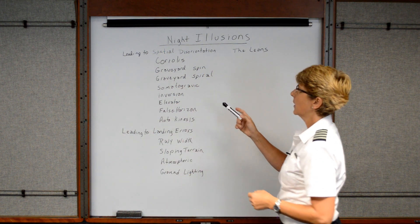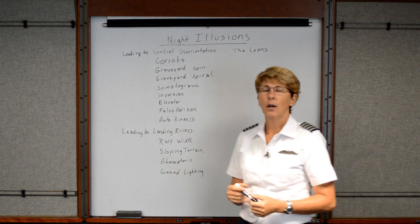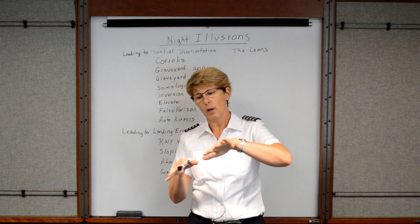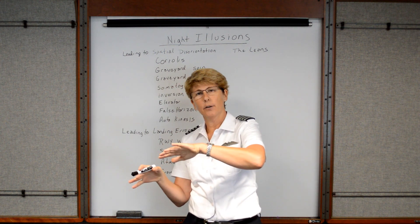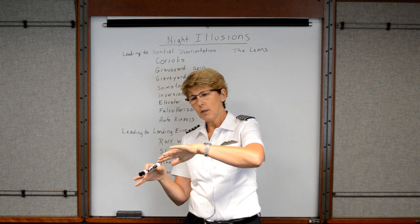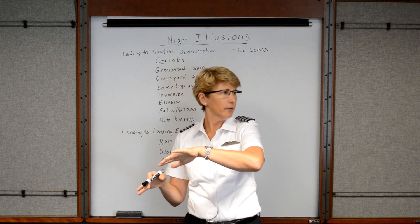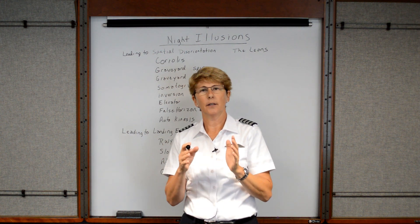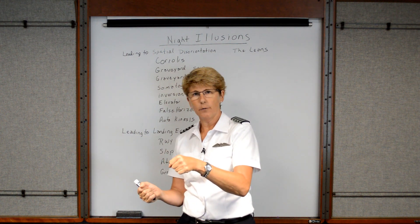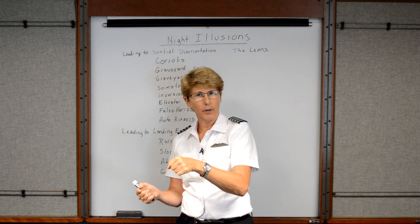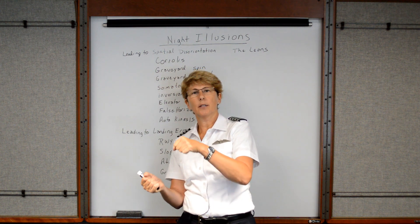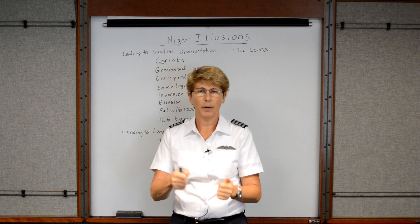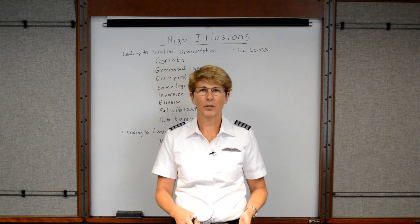The next thing we want to discuss is the Coriolis illusion. It is very similar to the leans because you're going to be in a prolonged turn, perhaps a standard-rate turn, but then you move your head suddenly. If you shift your head very quickly, it may make you feel like you're actually rotating on a different axis. So if you're in a turn to the right and you shift your head very quickly, it may make you feel as if the plane is pitching up or down, and then the pilot will react by putting the plane in a dangerous situation.